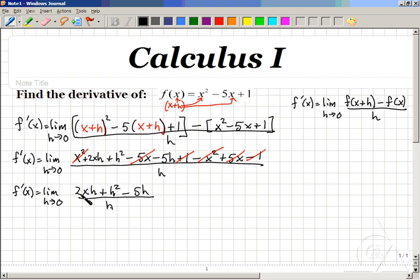f prime of x is equal to the limit as h goes to 0 of 2xh over h plus h squared over h minus 5h over h. And again, simplifying each fraction cancels the h out. This leaves us, and we'll write this in the second half of our screen over here,